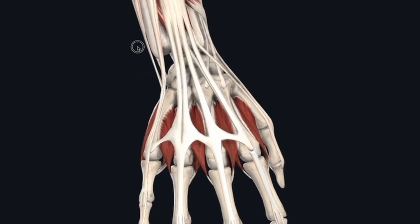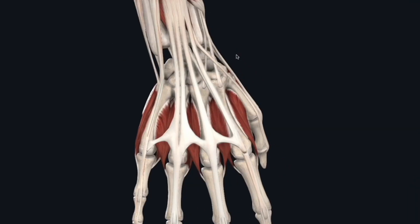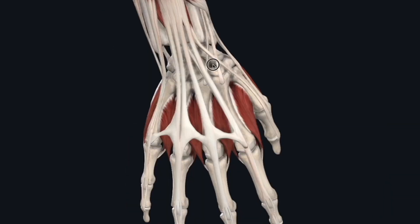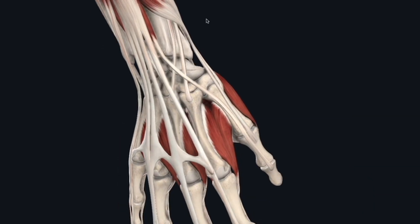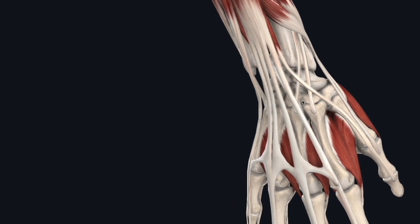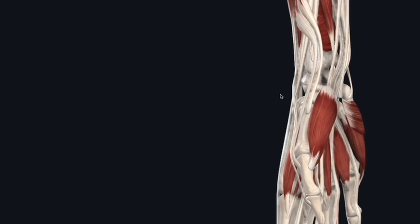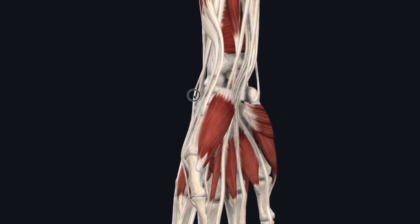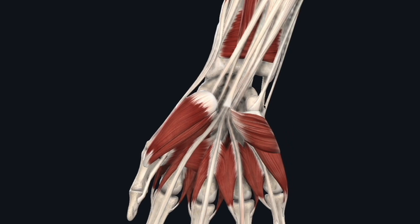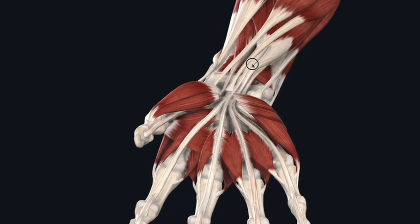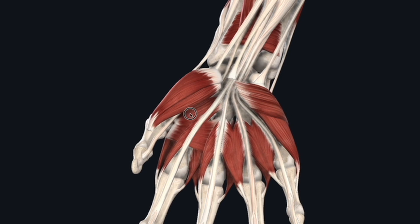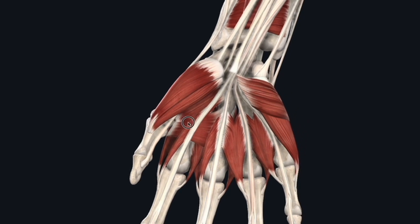The carpal bones themselves are a little bit harder to really get a finger on. You can palpate them, but it's a little difficult sometimes to identify exactly what you're palpating, other than perhaps the pisiform.